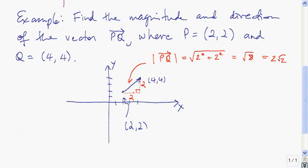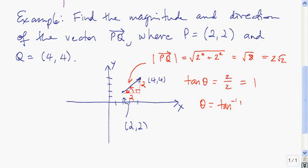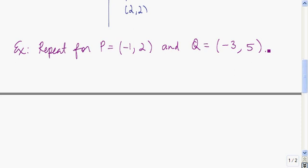To find the angle of the vector, we need the angle measured counterclockwise from the horizontal. We know the length of the side opposite this angle and the side adjacent to it. Calling the angle theta, the tangent of theta equals the opposite divided by the adjacent, which is 1. So theta equals the inverse tangent of 1, which is π/4 radians. The magnitude is 2√2 and the angle is π/4.